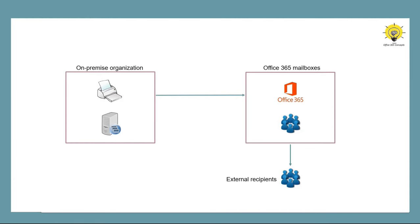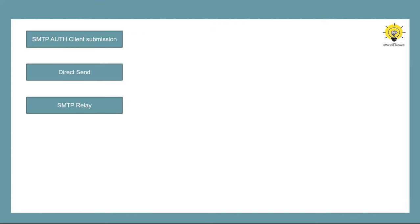You can come across a scenario where you have a device in your on-premise environment, like a printer, that sends printed documents in emails to internal and external users. But let's say all of the mailboxes are hosted in Office 365 and you have an application on-premise that sends invoice emails to these Office 365 users. In these scenarios, Office 365 allows you to use one of these three options to relay emails: SMTP Auth Client Submission, Direct Send, and SMTP Relay. The question is which option you should choose, so let's talk about these three options in detail.